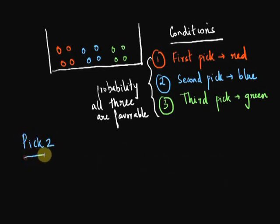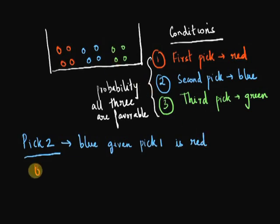So let's move on to calculating the conditional probability of the second draw being blue given that our first draw is red. So if I take my second pick now, I'm only left with three red balls in the box. One red ball has already been taken out. And then I have four blue and four green balls.